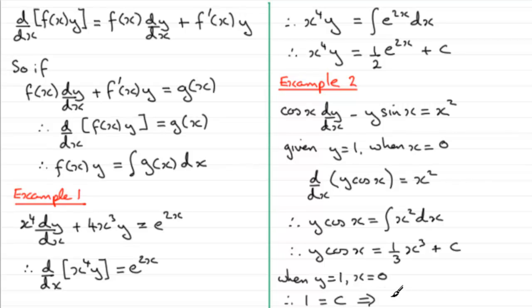So it follows then that our particular solution for this equation, rather than the general solution, remember general solution is when you have plus c in it, it's going to be now y cos(x) equals ⅓x³ and then plus the value of c, which in this example is 1. So there's our particular solution as opposed to the general solution here.